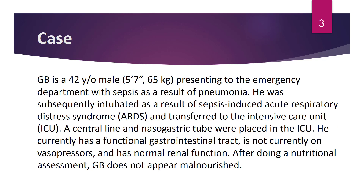We're going to start off with a patient case. GB is a 42-year-old male who comes to the emergency department with sepsis as a result of pneumonia. He was subsequently intubated due to sepsis-induced acute respiratory distress syndrome and transferred to the ICU. A central line and nasogastric tube were placed in the ICU. He currently has a functional GI tract, is not on vasopressors, and has normal renal function. After doing a nutritional assessment, GB does not appear malnourished.